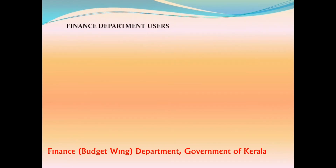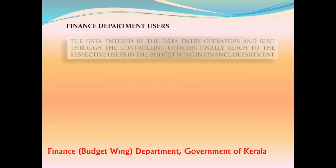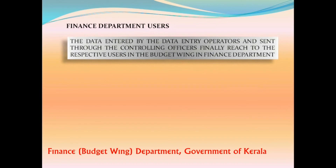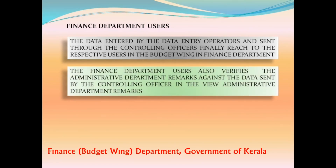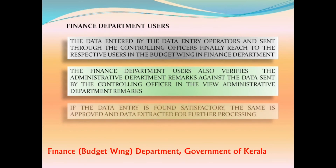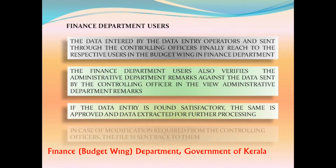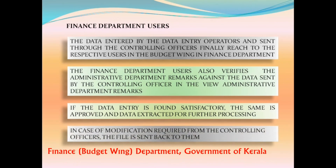The data entered by the Data Entry Operators and sent through the Controlling Officers finally reaches the respective users in the Budget Wing of the Finance Department. The Finance Department users also verify the Administrative Department remarks against the data sent by the Controlling Officer in the View Administrative Department Remarks section. If the data entry is found satisfactory, the same is approved and data extracted for further processing. In case of modification required from the Controlling Officers, the file is sent back to them. Thanks for watching this introductory note.